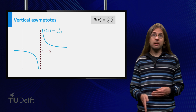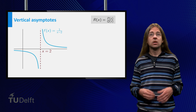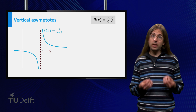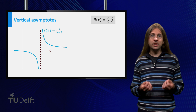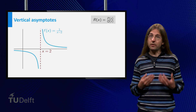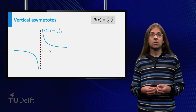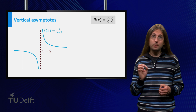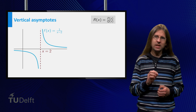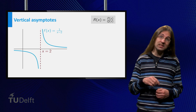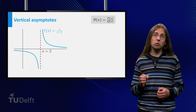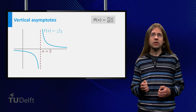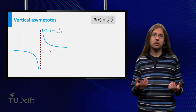A rational function can also have vertical asymptotes. Consider f equals 1 over (x minus 2). For x equal to 2, the denominator becomes 0, and the function is not defined. For x slightly more than 2, this becomes 1 over a small positive number, which is very big. For x slightly less than 2, it is 1 over a small negative number, which is large negative. Therefore, the graph has a vertical asymptote at x equals 2.